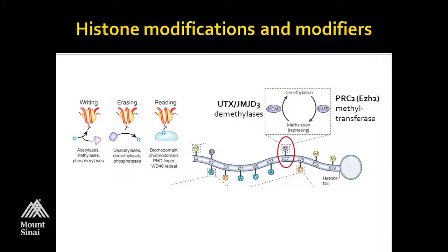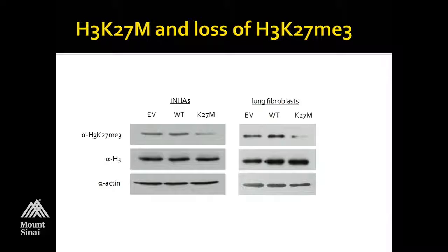What happens when you take a cell and put in the mutant histone? These are western blots of an immortalized normal human astrocyte population — you see a similar thing with lung fibroblasts. This is a wild-type histone being put in, and this is the mutant histone. What you see is that the trimethyl mark on H3K27 disappears when you put in the mutant histone.